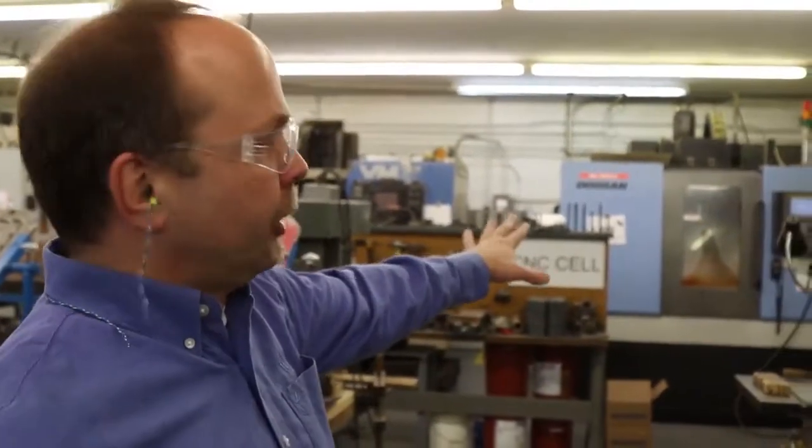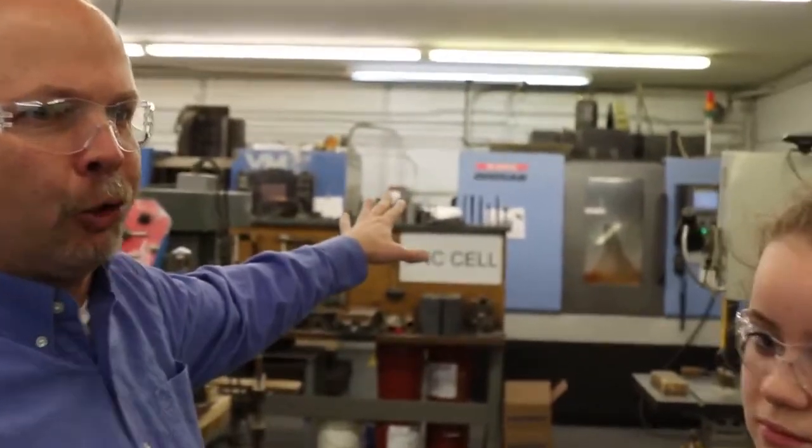Here in our pattern shop is where we make the pattern equipment to make the molds so we can pour the molten metal into to make our castings. We can export that 3D model to our CNC machines. That's our computerized numerical control machines in the back where we make the pattern impressions from that 3D model.